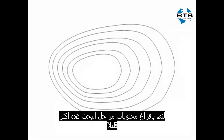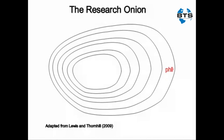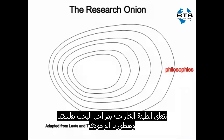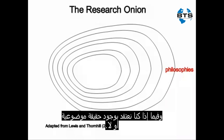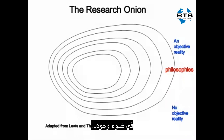Let's unpack this research onion a little further to better understand how our ontological and epistemological views shape our approach to research. The research onion outer layer relates to our philosophy, our ontological perspective, whether we believe there is an objective reality or not, and our epistemology — how we believe we can come to know knowledge given our ontology.